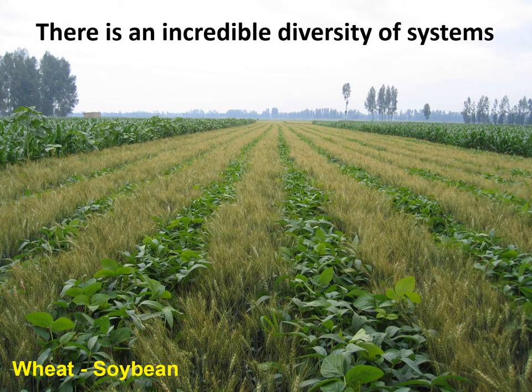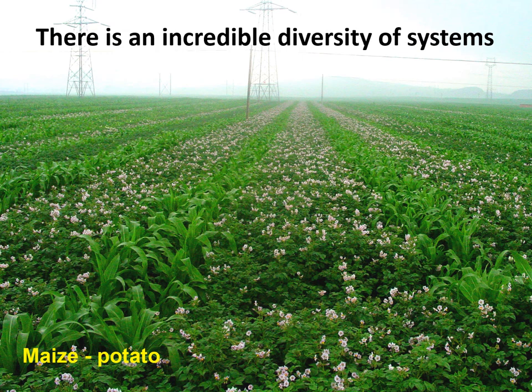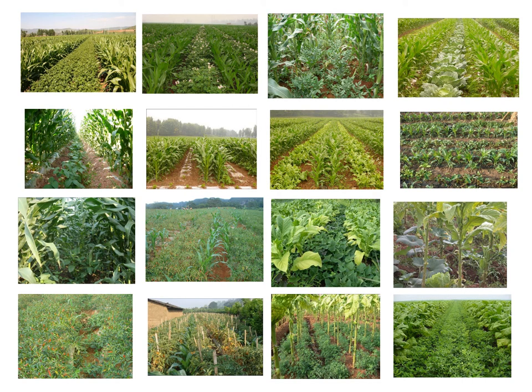This is soybean and wheat. This is potato and maize, which is used in Yunnan province in the south. This system appears to be good for the production of both potato and maize, and it can help to control phytophthora, I've been told. The diversity of systems is very large, as these slides try to illustrate.